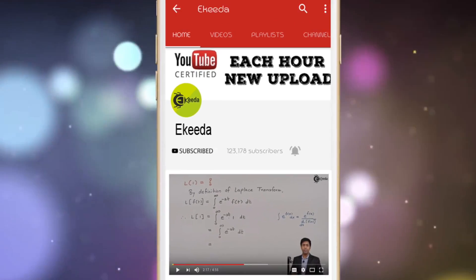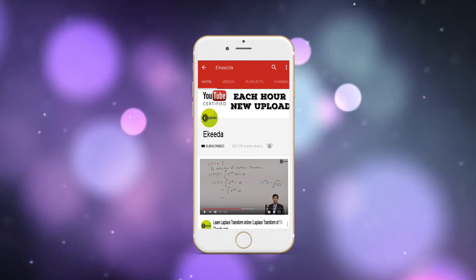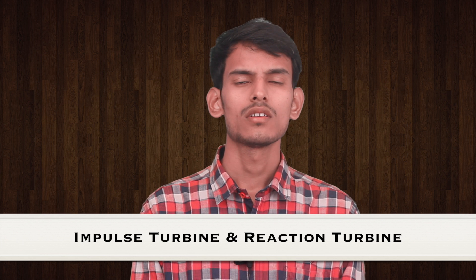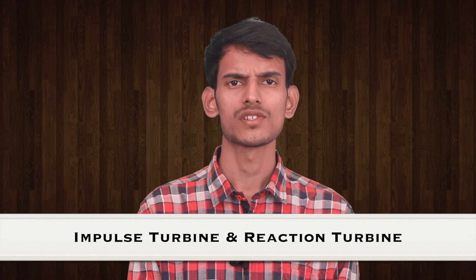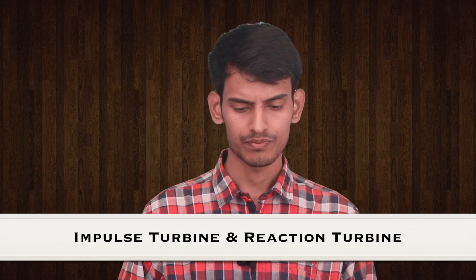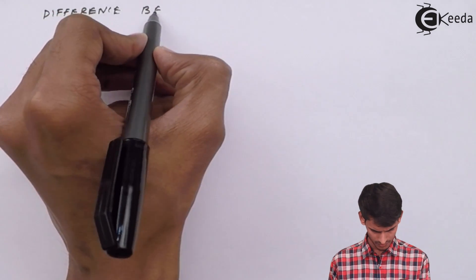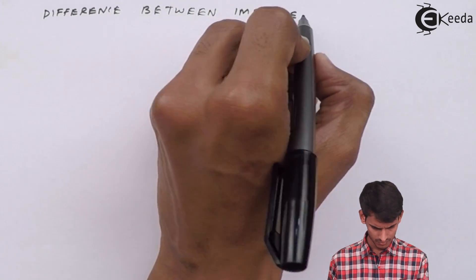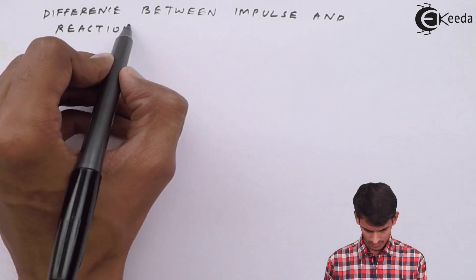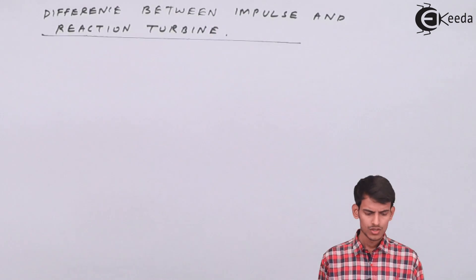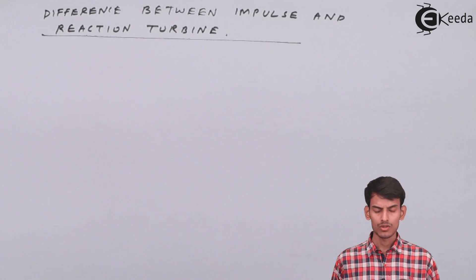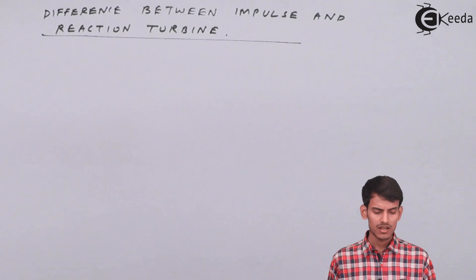Subscribe to Ikeda channel and press the bell icon to get updates about latest engineering, HSE and IIT JEE mains and advanced videos. Hello students, today the topic we will be studying is the last topic remaining in this chapter: the difference between impulse turbine and reaction turbine. We've already seen different types of turbines. We'll make two columns and write each difference and I'll explain the meaning of each.